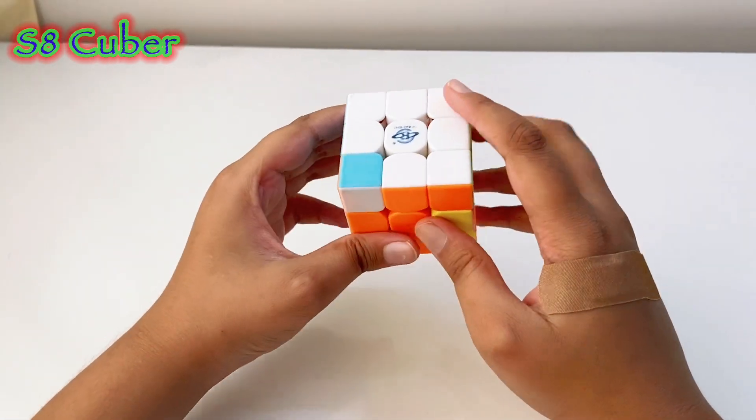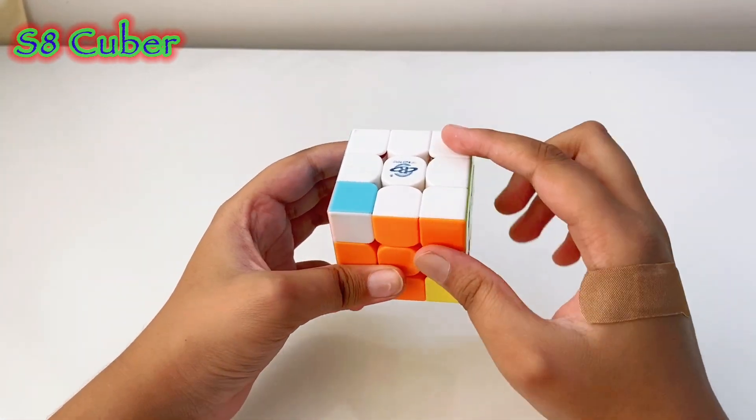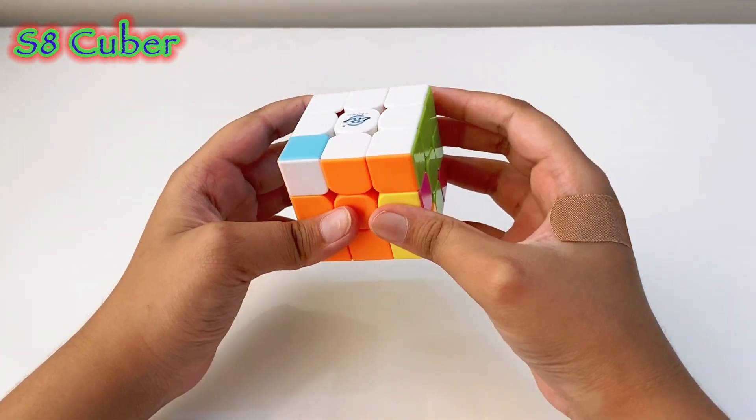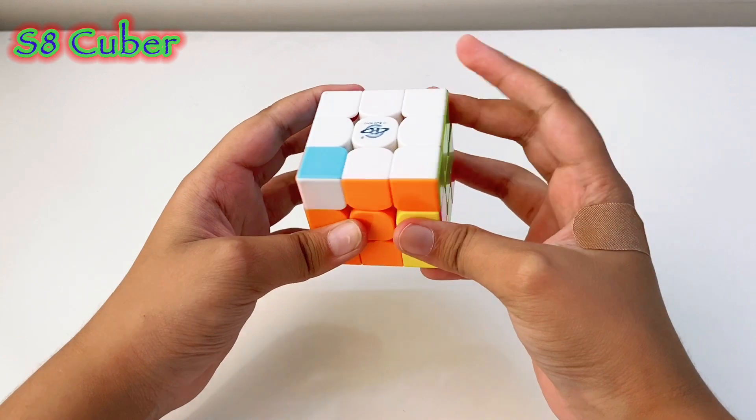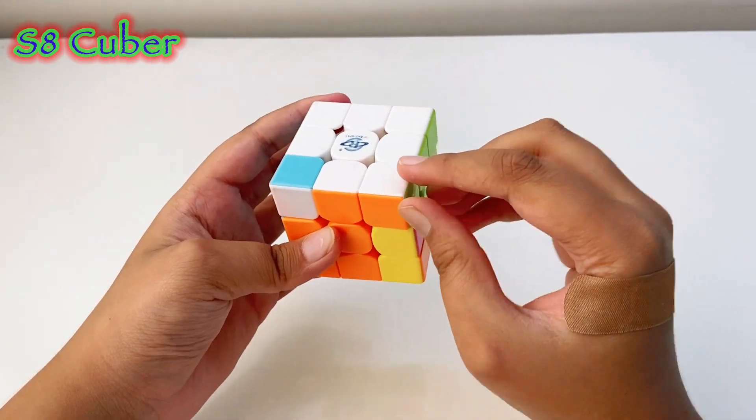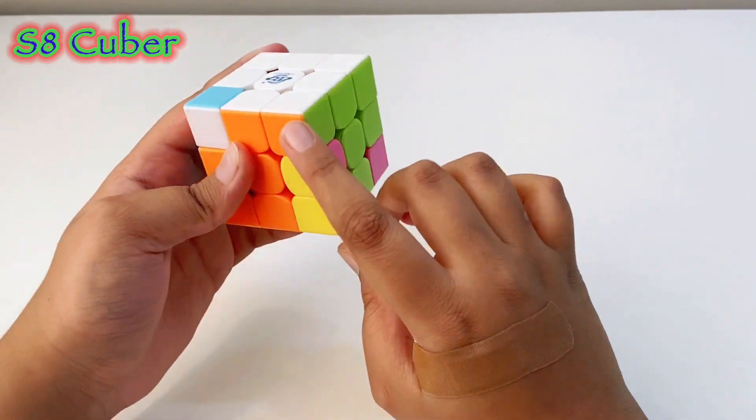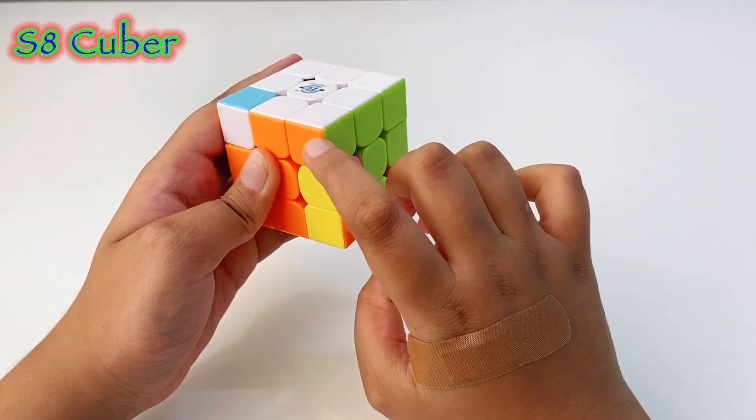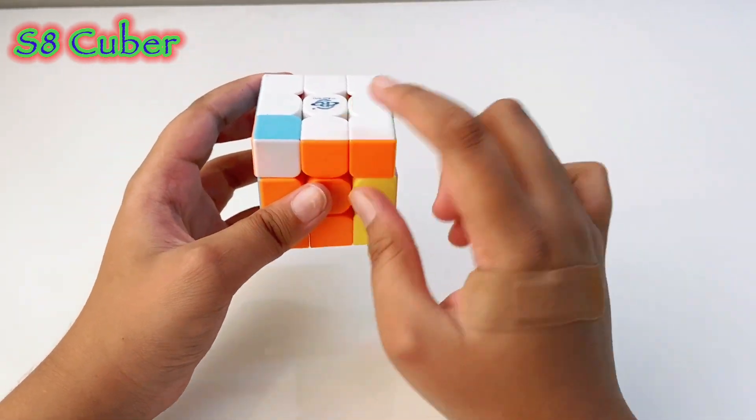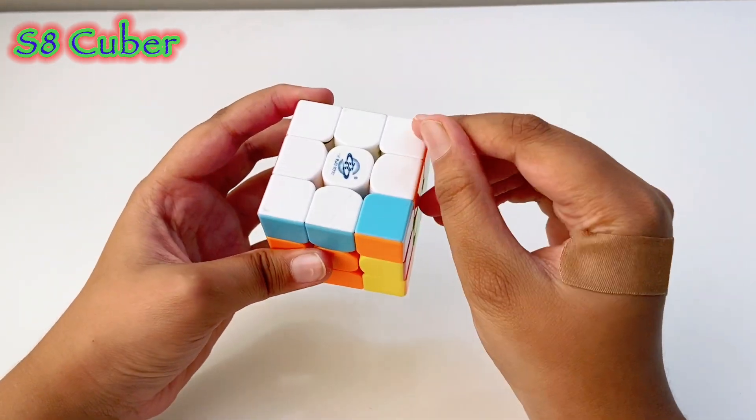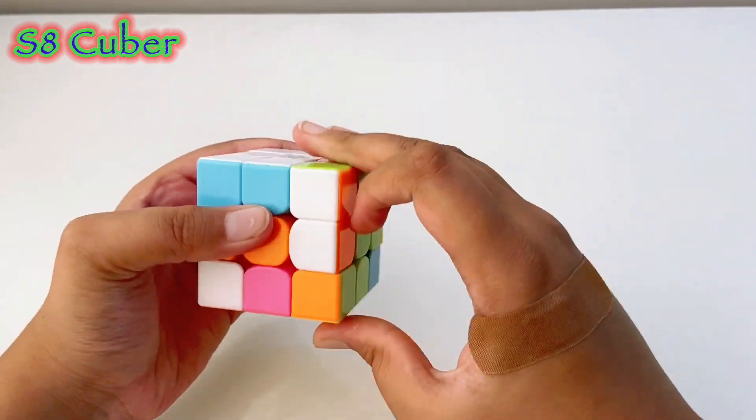As you guys can see, one of them is solved. Now for this one to get solved, we'll have to move it. The unsolved corner was here, this is the corner which we solved, and this is the unsolved one. We'll just get it over here where the unsolved one was, and then we'll just do this algorithm again.